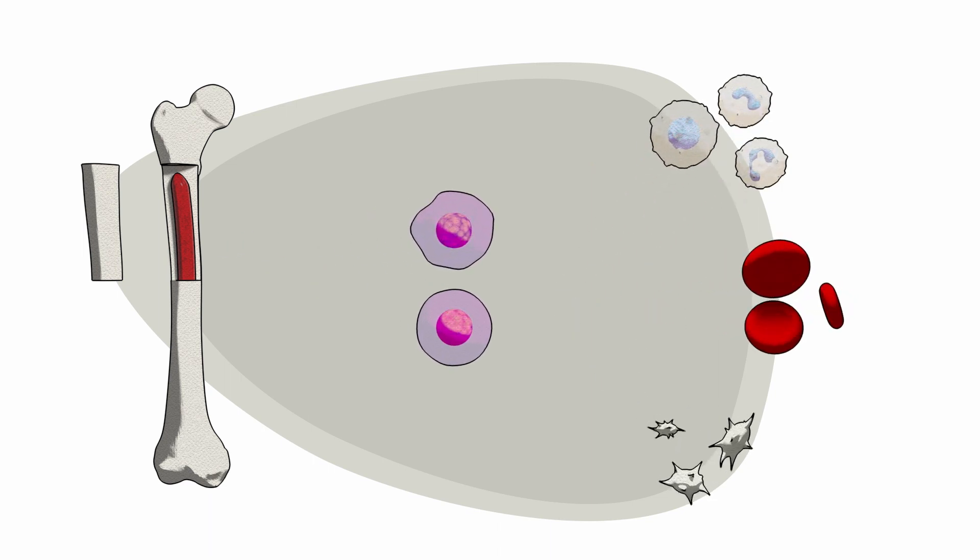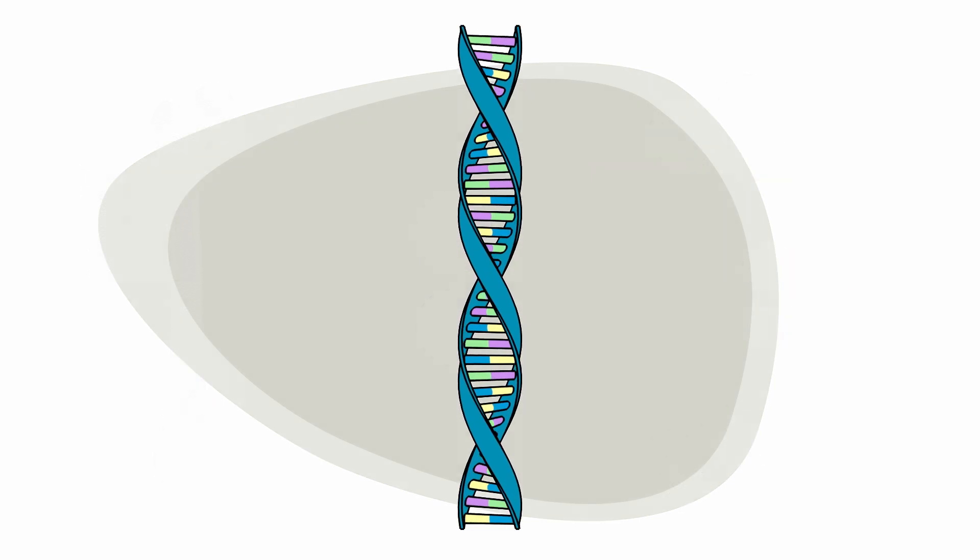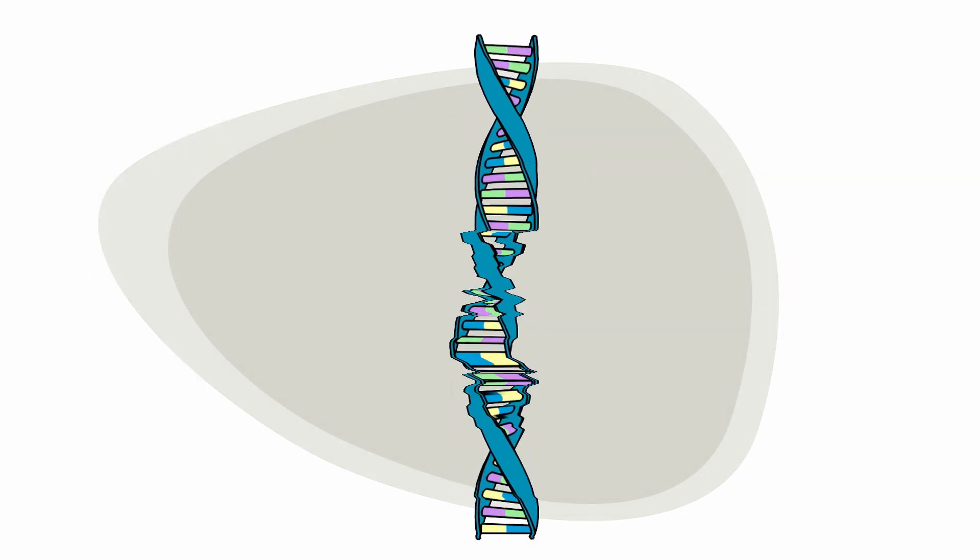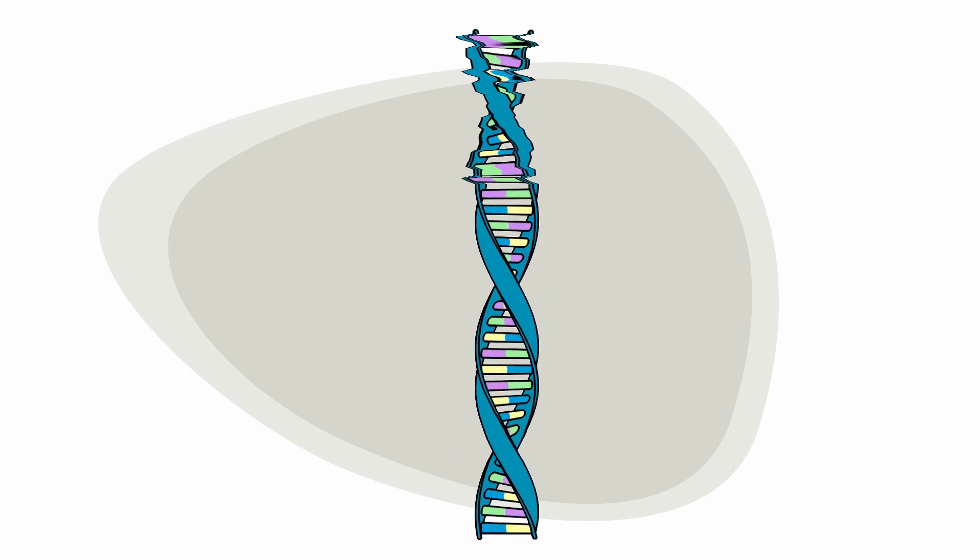In CML, something goes wrong with the DNA in bone marrow cells, causing normal bone marrow cells to become leukemia cells.